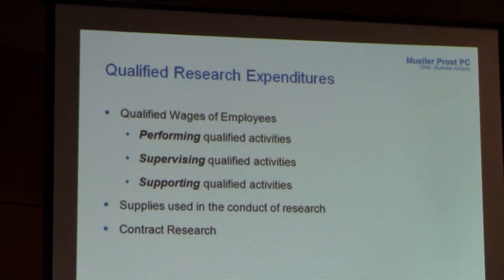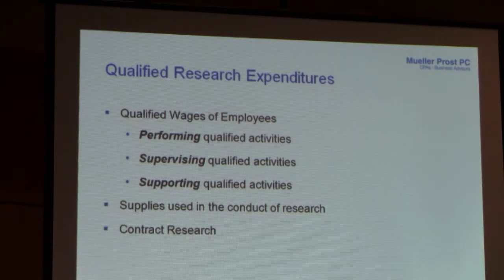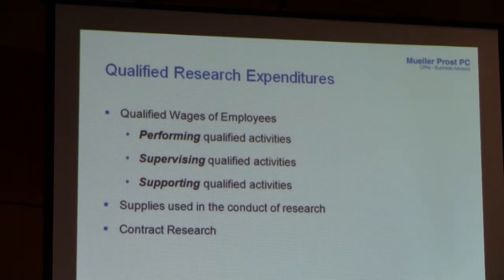We just had new proposed Treasury regulations issued on September 5th — not finalized yet — that clarify I can sell my prototype and still include those costs. That's huge. The third expenditure type is contract research, where you pay an outside party to perform research on your behalf — an independent engineering firm or independent contractor assisting in research efforts. I get to count 65% of those costs.